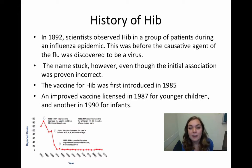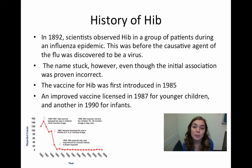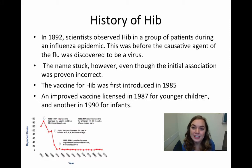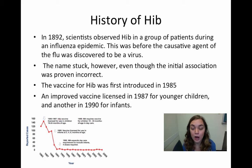The vaccine for Hib was first introduced in 1985. And then two years later, an improved version was licensed for use in younger children. And then in 1990, another improved version was licensed for use in infants. I've included a graph of the reported cases during the years of vaccine introduction to the population, and you can see the very steep drop in the number of cases after each subsequent introduction of the vaccine. After 1990, it's very close to zero.